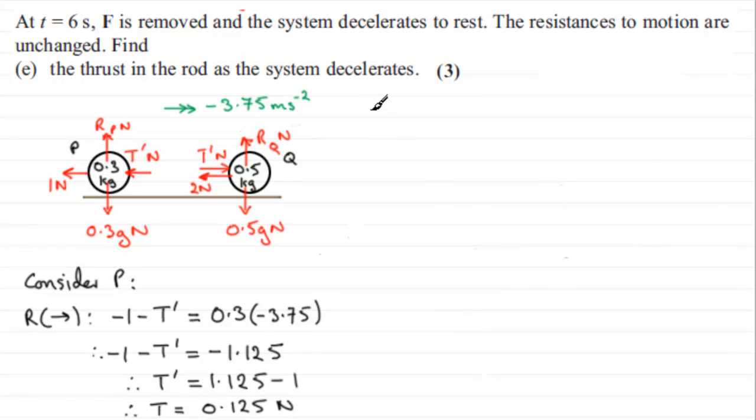I did say though that you could consider Q. So let's go for that one, consider Q. Now if we consider Q, again I'd want to resolve in the direction of motion, which will be to the right. So if we do that one, we've got T dash,